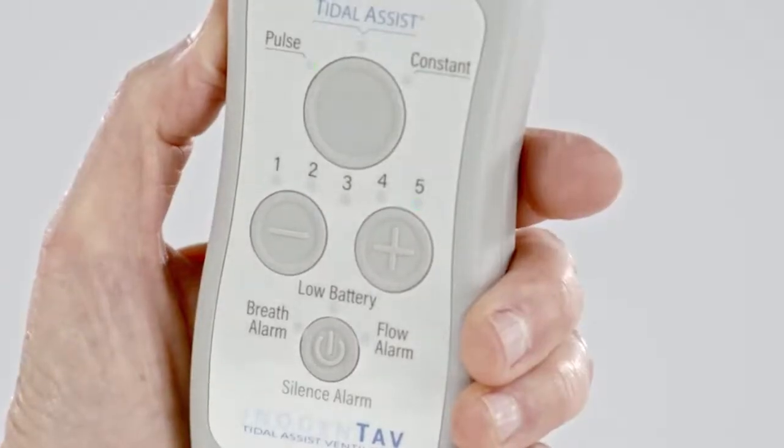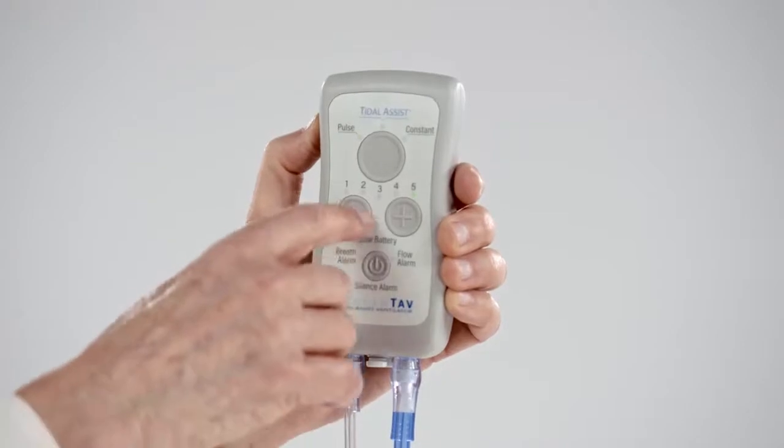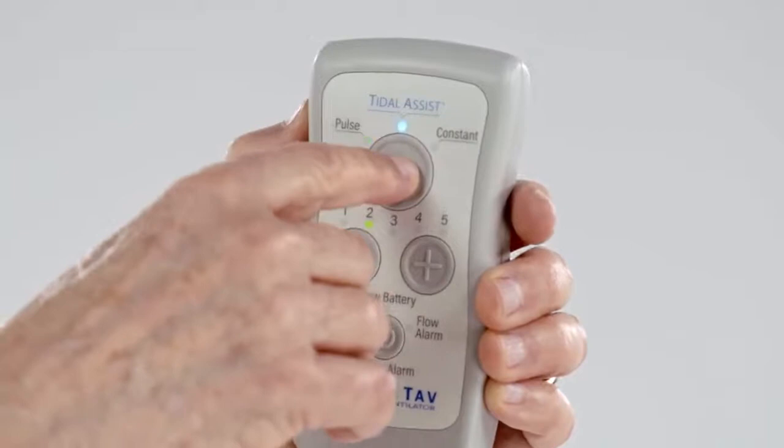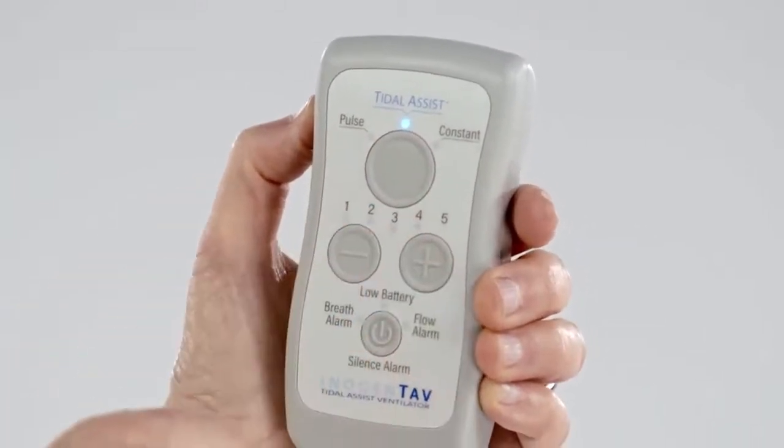The next mode is Tidal Assist, which is the primary therapy type. To select it, first set the oxygen level to 2 for comfort, then press the mode button once. You can use the plus and minus buttons to set the level you want.